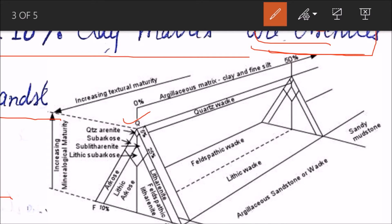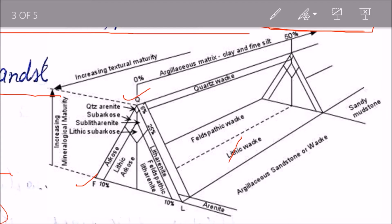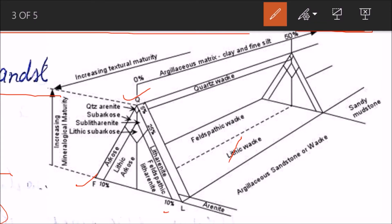You see, this is quartz, there is feldspar, and in this region you have lithic fragments or rock fragments. Now you see this line here - this line denotes 10 percent line.